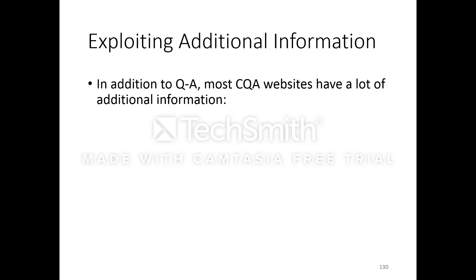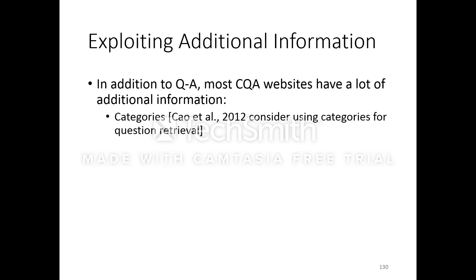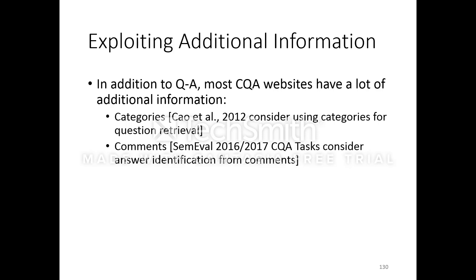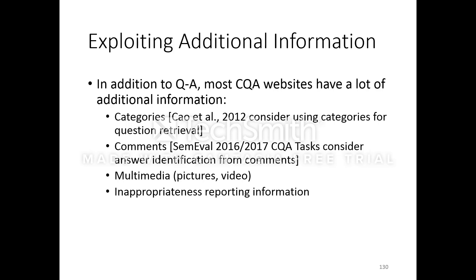Another line of research could be exploiting additional information. In addition to Q&A content, most CQA websites have a lot of additional information — categories, comments, and multimedia like pictures and video posted along with answers and questions. You could also look at inappropriateness reporting information, such as downvotes and abuse reports, to identify what kinds of answers or questions they correlate with and whether we can automatically identify problematic content before users do the reporting.